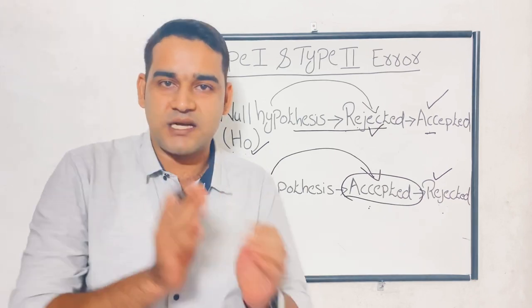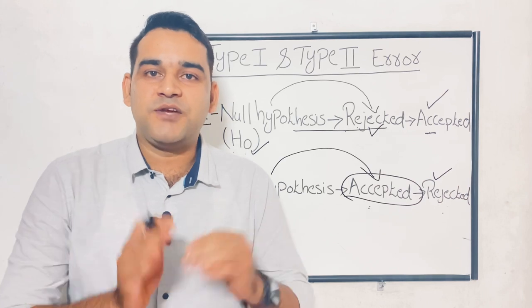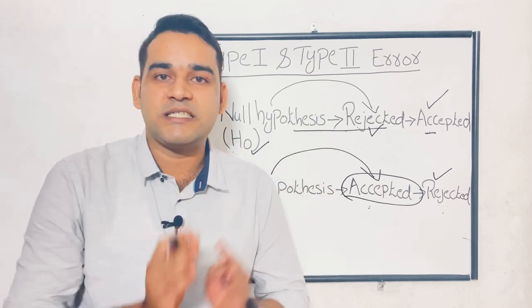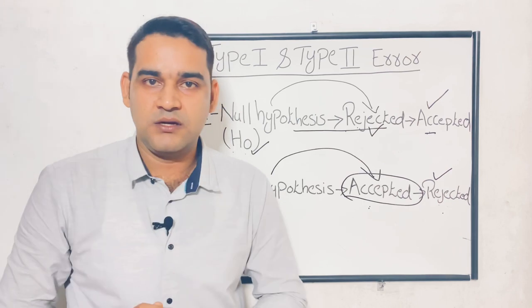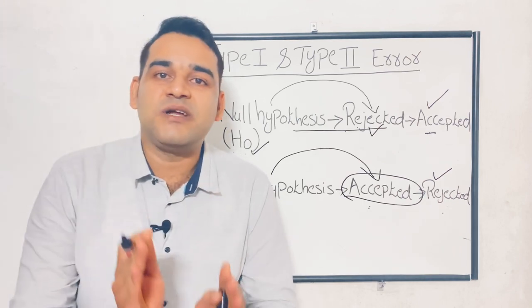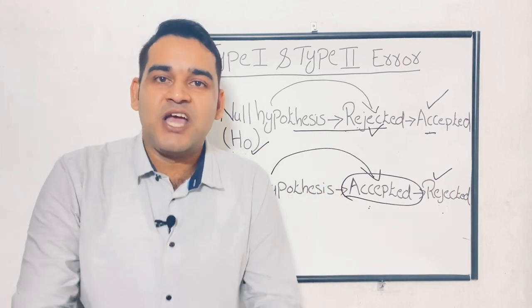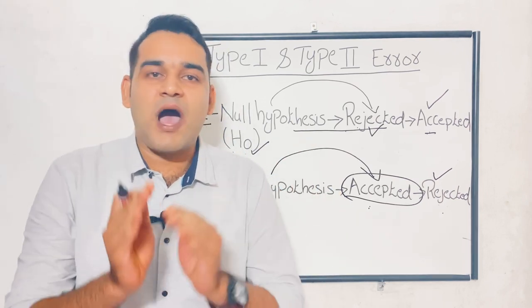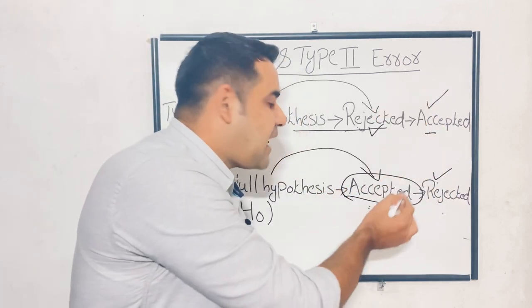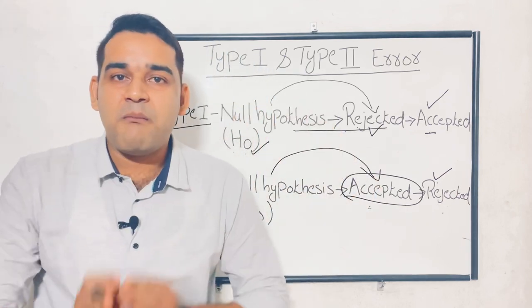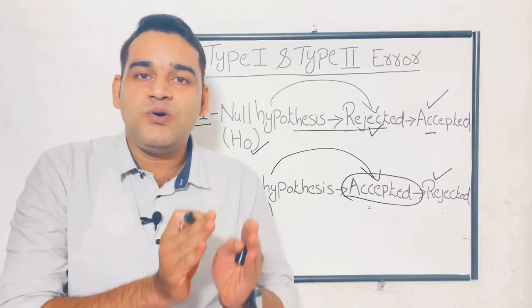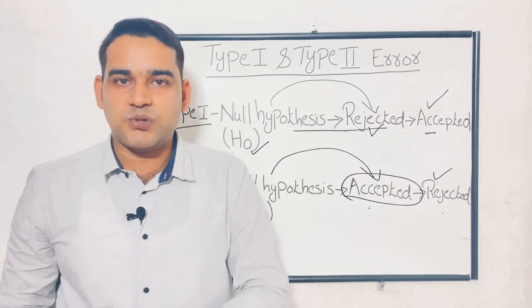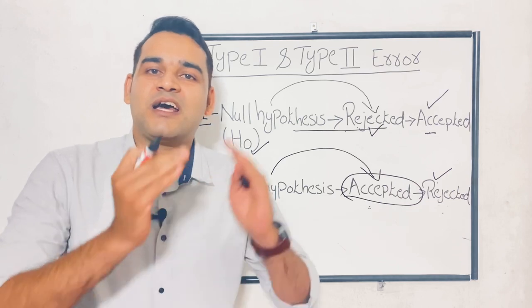What is type 2 error? With the same example — you got a job offer, but it was not a good offer for you: less salary, poor working conditions, and more working hours. You thought it was a good offer, but actually it is a bad offer. By mistake you accepted that job offer with low salary — type 2 error occurred. Instead of rejecting, you accepted. So: type 2 — instead of rejecting you accepted; type 1 — instead of accepting you rejected.